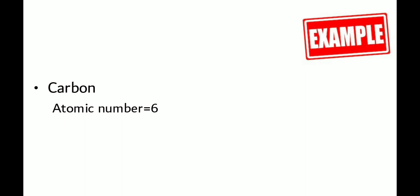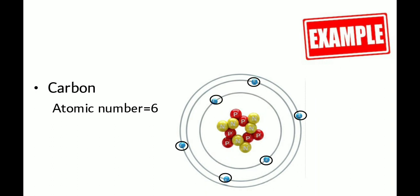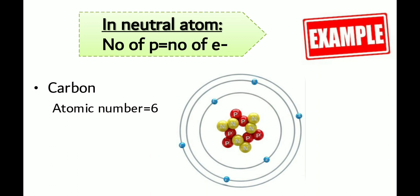For example, carbon's atomic number is 6. Since atomic number is the number of protons, the number of protons in carbon is 6. Looking at its structure, if you count the protons there are 6, and if you count the electrons there are also 6. So positive particles = 6 and negative particles = 6, meaning plus 6 and minus 6 — the atom overall becomes neutral.